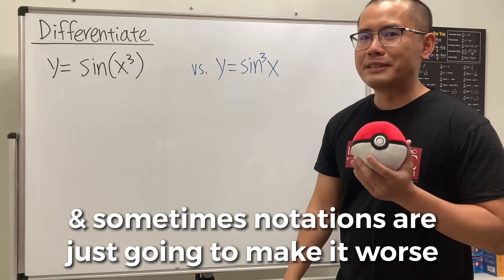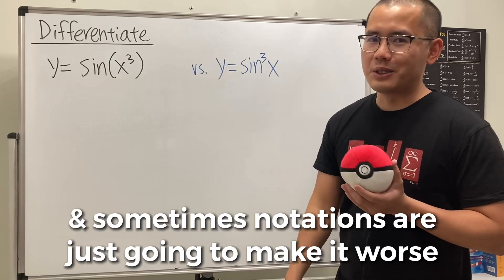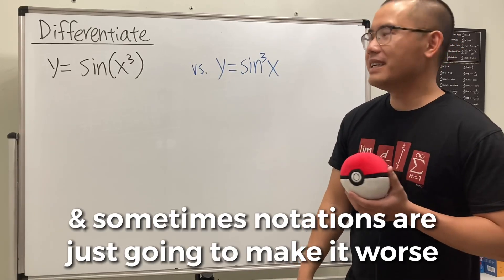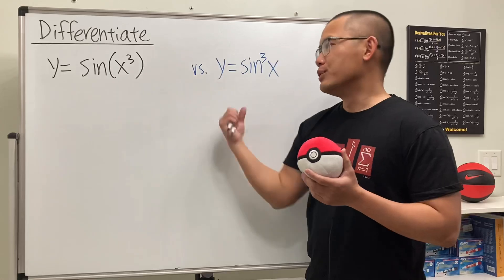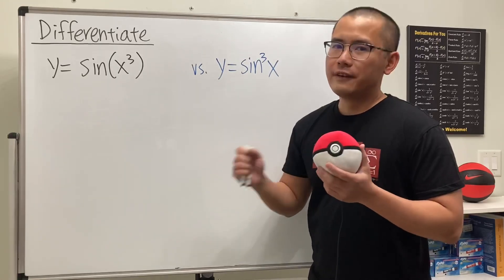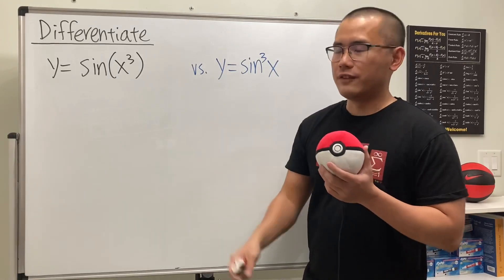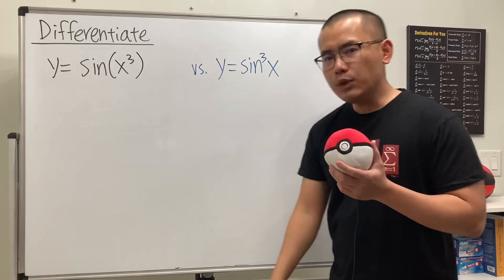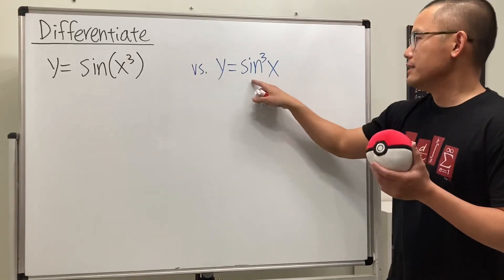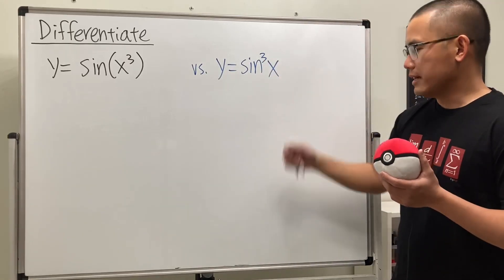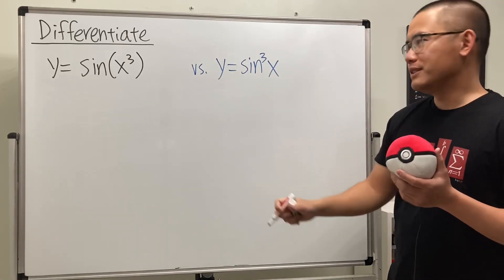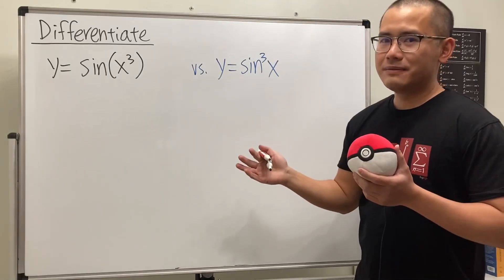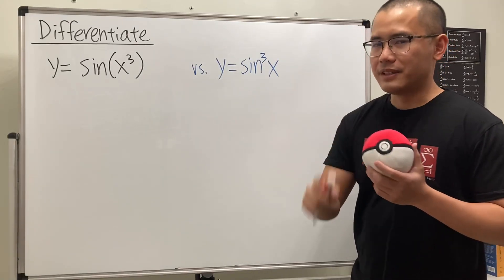The chain rule for derivatives is hard, and sometimes notations make it worse. I want to explain two questions: the first is to differentiate sine of x to the third power, and the other is sine to the third power of x. You can see that the little three is at different places.